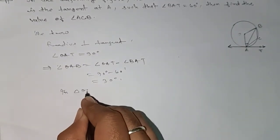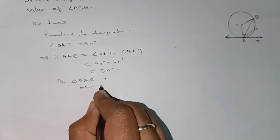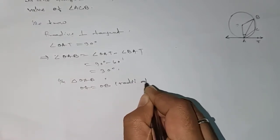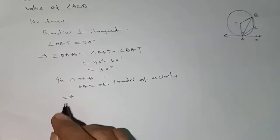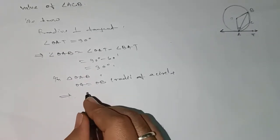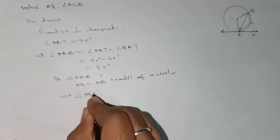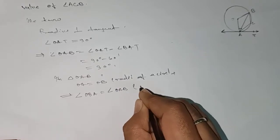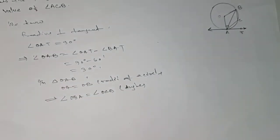We can see that OA equals OB, as these are radii of the circle. This implies angle OBA equals angle OAB, because angles opposite to equal sides are equal.